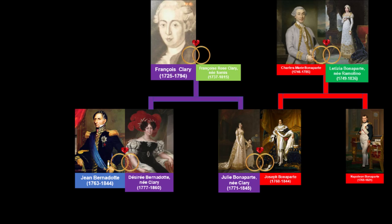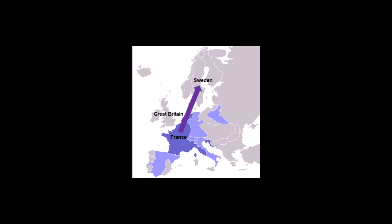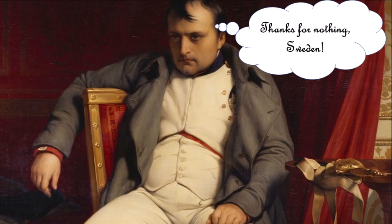After the Swedish Crown Prince Charles August died on May 28, 1810, Jean-Baptiste Bernadotte — a Marshal of France and husband of Napoleon's former fiancée, herself the sister of Napoleon's eldest brother's wife — was elected Crown Prince of Sweden on August 21, 1810. Under these circumstances, on November 13, 1810, Napoleon sent an ultimatum to Sweden's government demanding that Sweden declare war against Great Britain within five days. This war began on November 17, 1810.